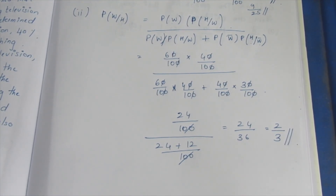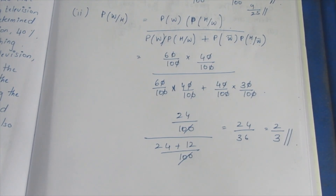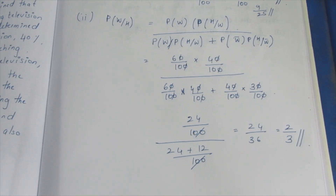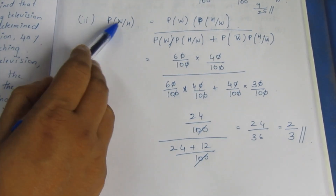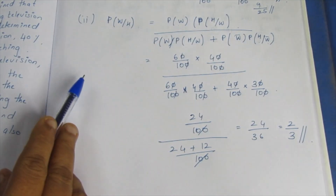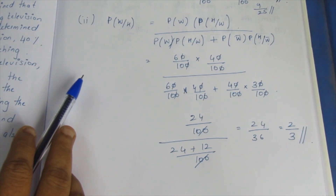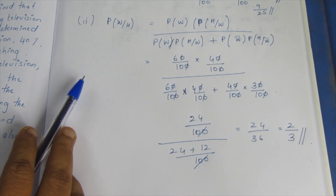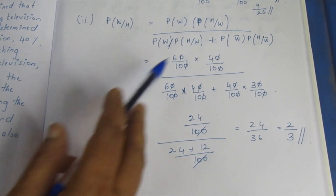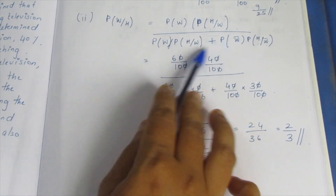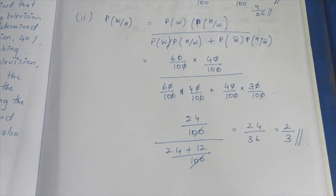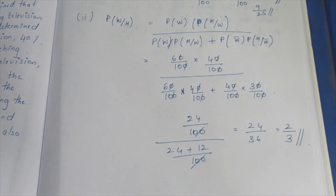So 2 by 3 is the answer for the second subdivision where the husband is watching. That's the sum. Thank you.